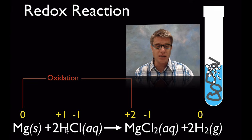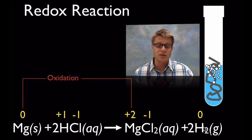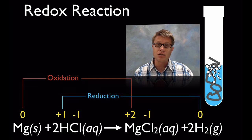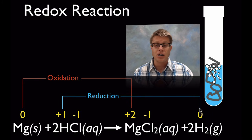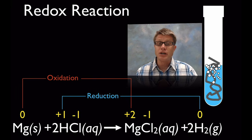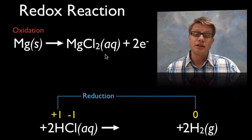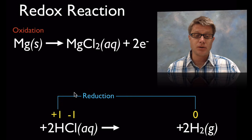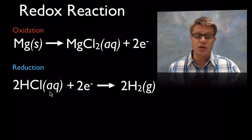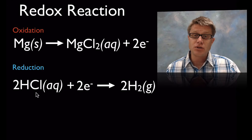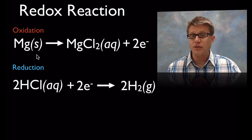Where did those electrons go? Hydrogen is plus 1 on the left side and 0 on the right side. Since it's gone down in value, it's gained electrons. With a coefficient of 2, we've actually gained 2 electrons — that's the reduction portion. So we can write the half equations: the oxidation half is magnesium solid losing 2 electrons, and the reduction half is hydrochloric acid gaining those electrons lost from the magnesium.